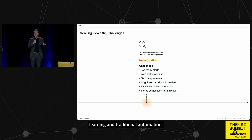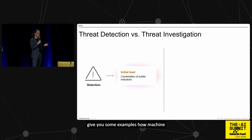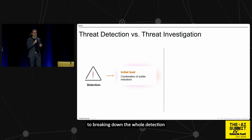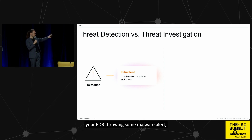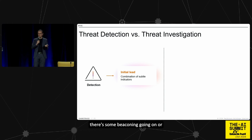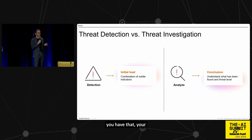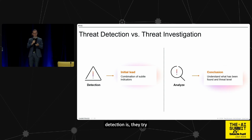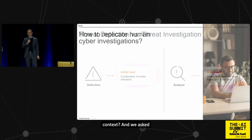We thought a lot about how we can break this down, replicate it, and automate it with machine learning and traditional automation. It really comes down to breaking down the whole detection engine: the initial detection — this could be your EDR throwing a malware alert, your identity security, or a network security tool flagging beaconing or lateral movement. That's normally your initial lead, but once you have that, your human team then goes and analyzes it.